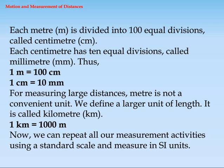Called centimeter (cm). Each centimeter has 10 equal divisions called millimeter (mm). Thus, 1 m equals 100 centimeters, and 1 centimeter equals 10 millimeters. For measuring large distances, meter is not a convenient unit, so we define a larger unit of length called kilometer (km). 1 kilometer equals 1000 meters.